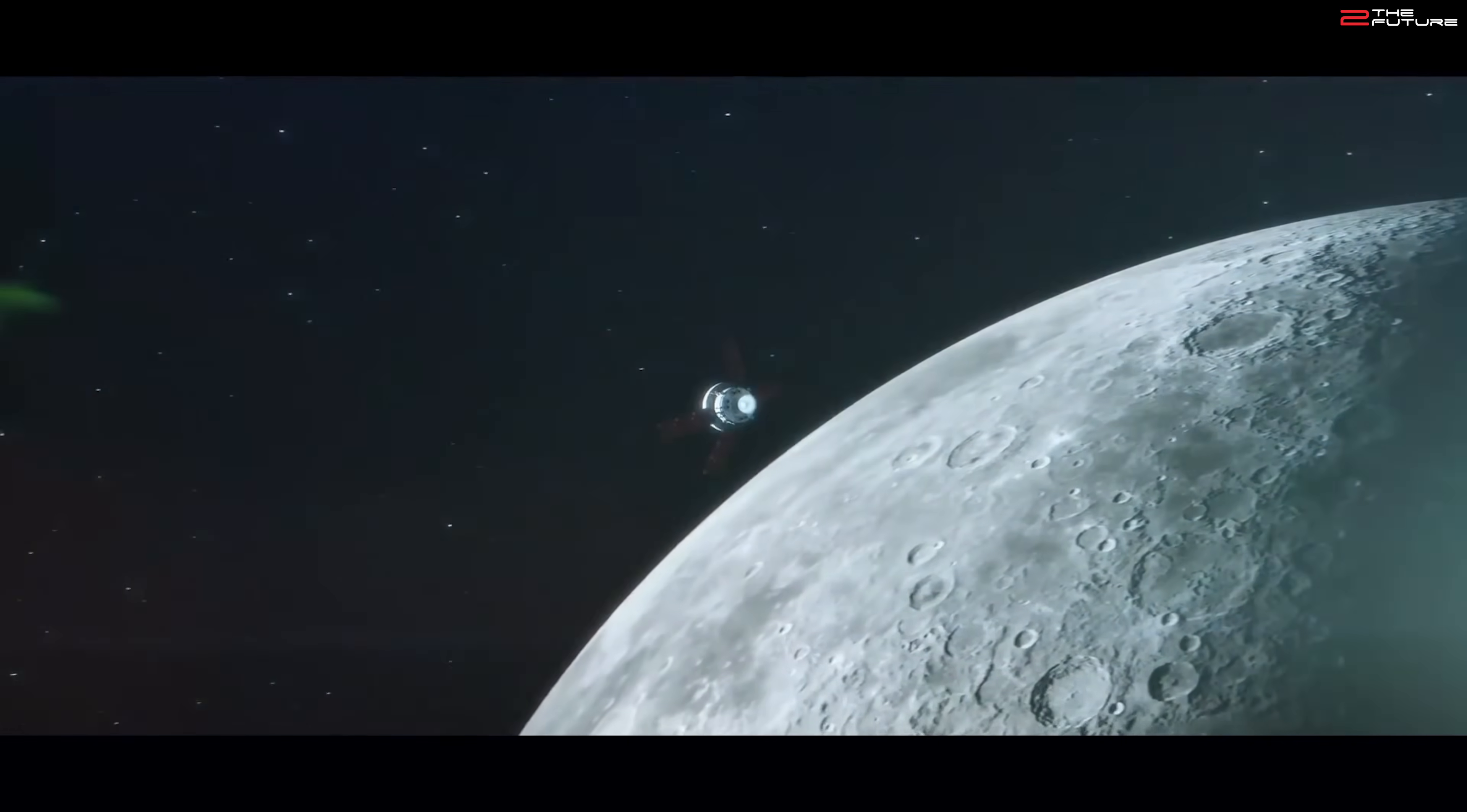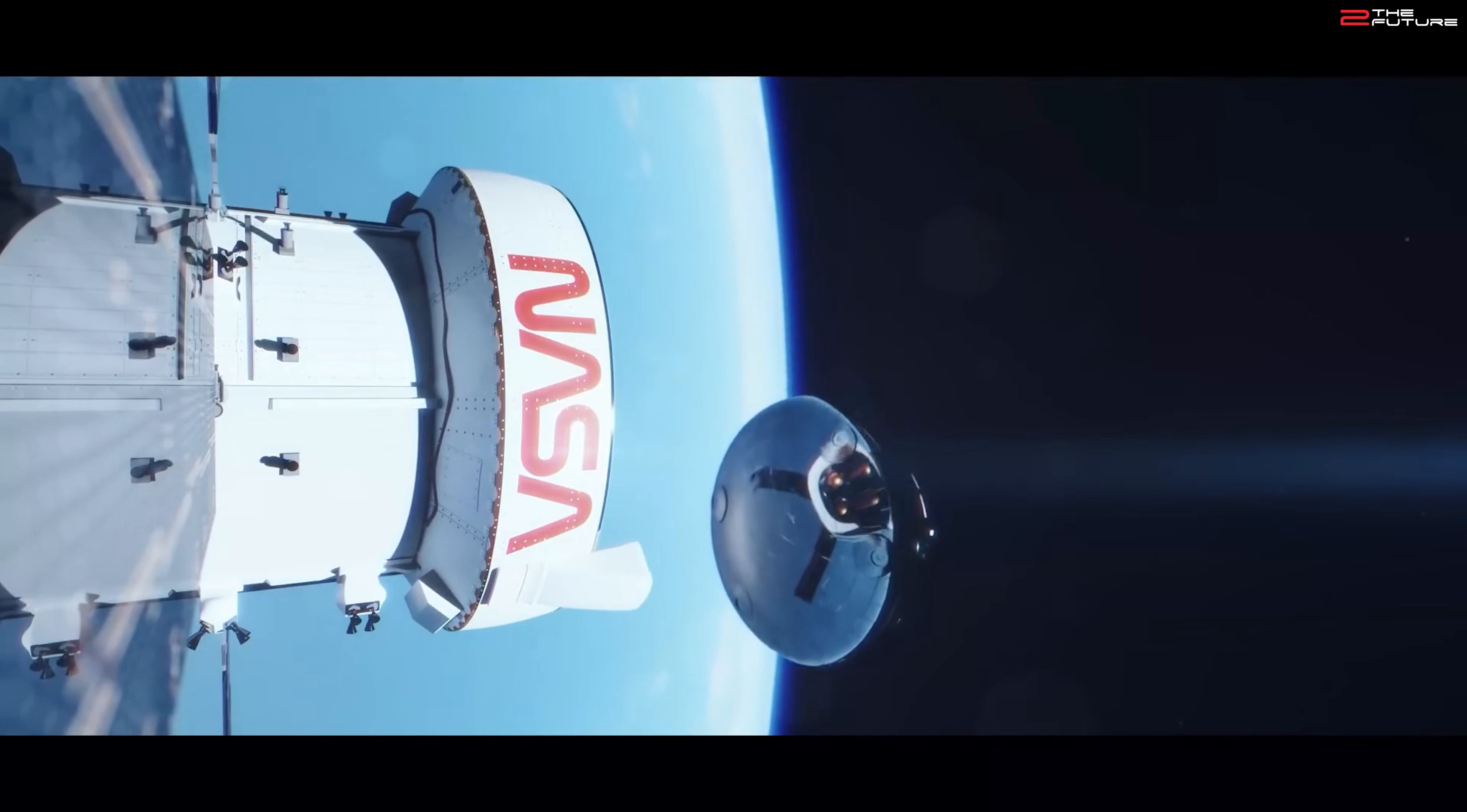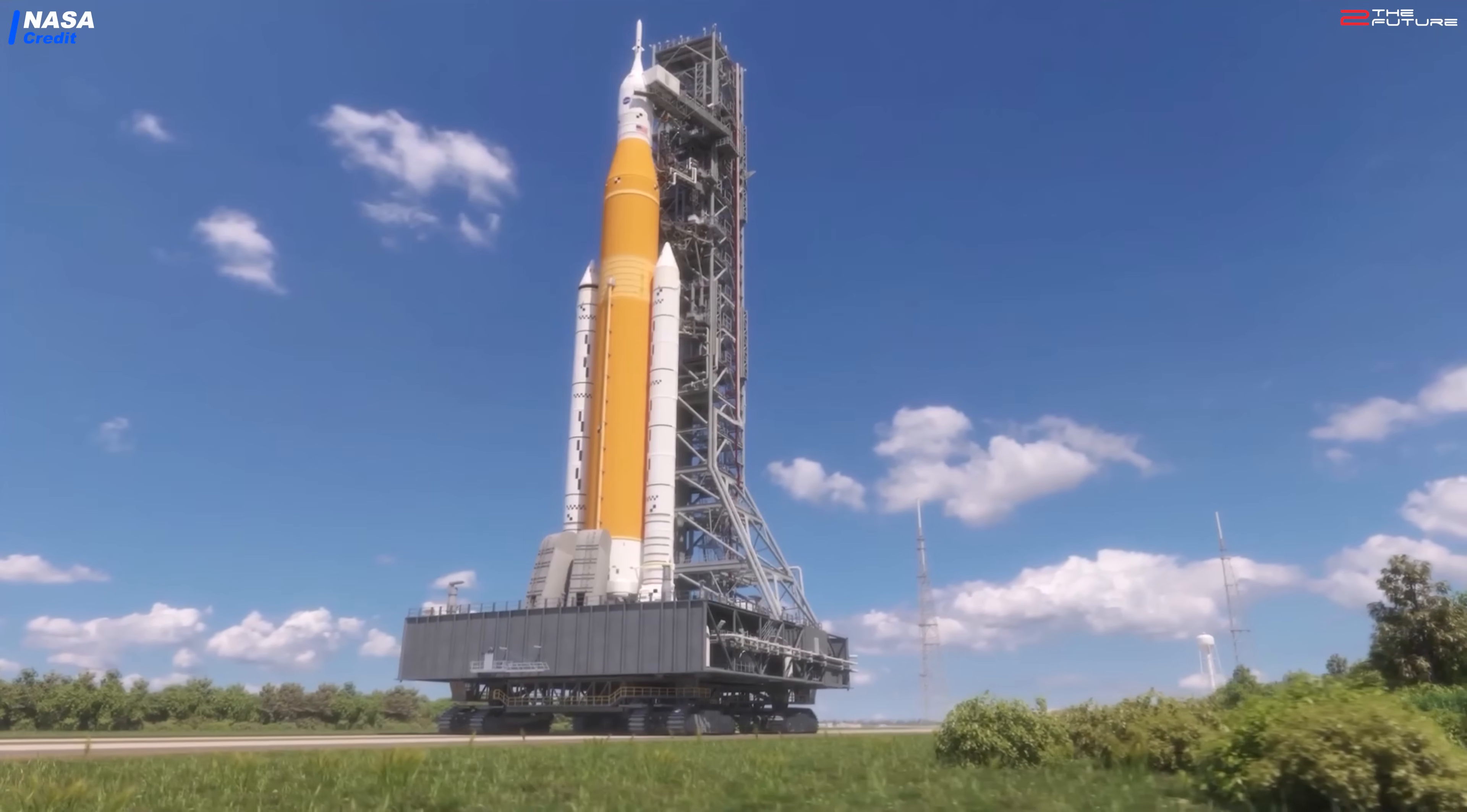So they strongly suggest to NASA ditching the whole SLS and Orion architecture and go full commercial. In short, use a commercial launch system to do the entire moon mission, so no SLS or Orion involved in any way. Something we've been saying on this channel for over two years now. But of course it will be hard for NASA to ditch SLS, not because they don't know themselves that the SLS is just a giant jobs creation program.